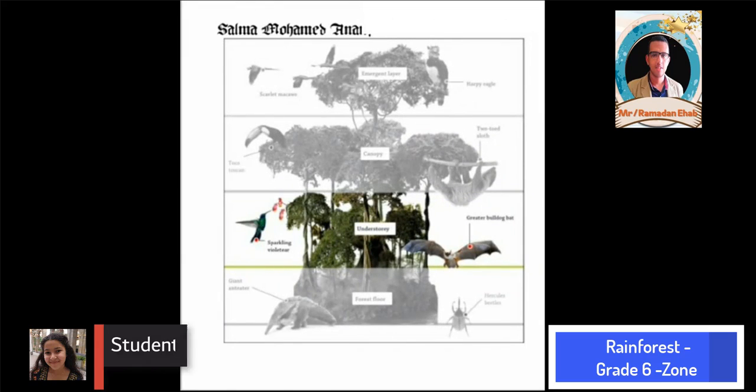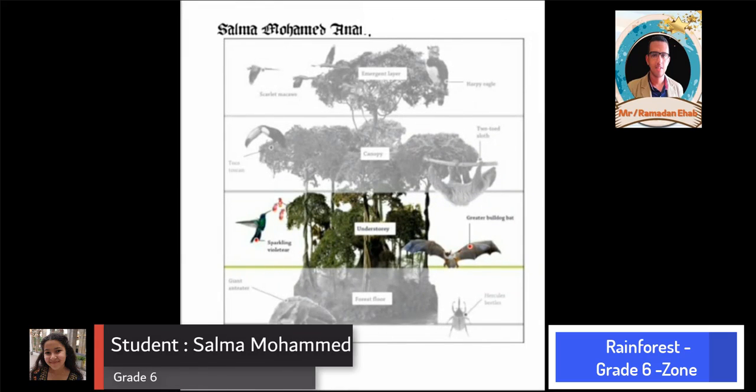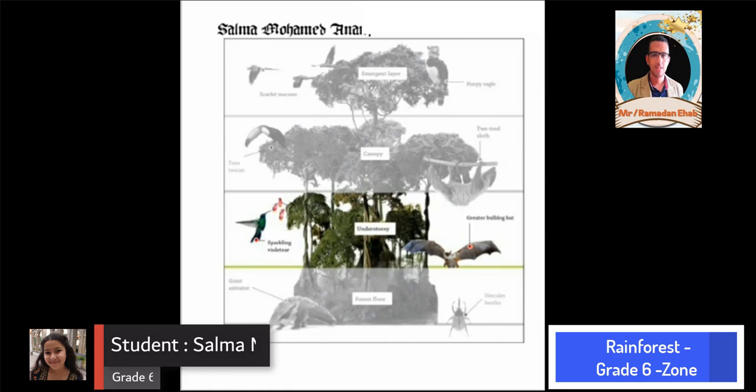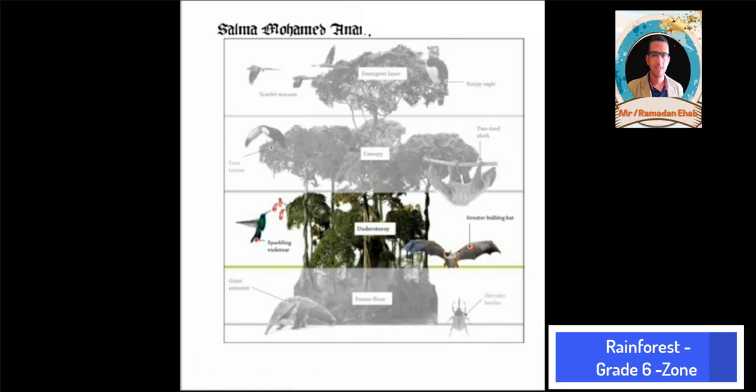Third, I will talk about the understory layer. It is very hot and humid. There is little sunlight and wind because of the canopy.